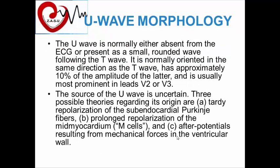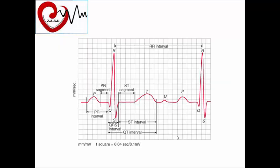The U wave is normally either absent from the ECG or present as a small, rounded wave following the T wave. It is normally oriented in the same direction as the T wave and has approximately 10% of the amplitude of the T wave. It is usually most prominent in leads V2 and V3. The origin of the U wave is uncertain; proposed theories include tardy repolarization of subendocardial Purkinje fibers, prolonged repolarization of mid-myocardial cells, or afterpotentials from mechanical forces in the ventricular wall.